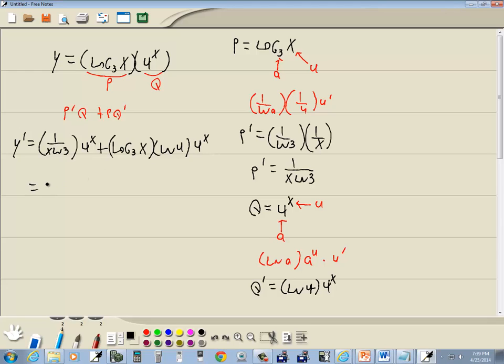Okay. Now I have a 4 to the x, so I could factor that out, and then that gives me 1 over x natural log of 3, plus that's gone and these I'll put in fraction form. So this would be log base 3 of x times natural log of 4 over 1, and we would get a common denominator.